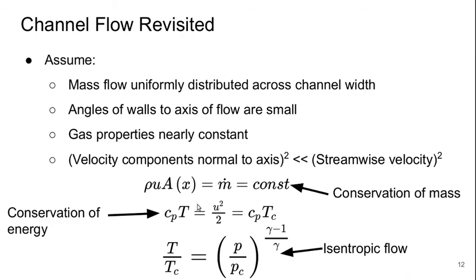Oh, I'm sorry, there's a typo here, this should be a plus. CpT plus u squared over 2 equals CpTc. And from the assumption of isentropic flow, we get a relationship between what's happening with the temperature and what's happening with the pressure.